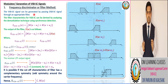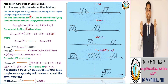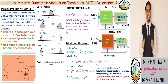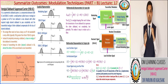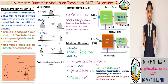First we take the frequency discriminator or filter method. Here the VSBSC signal is generated by passing the DSBSC signal via an appropriate filter, which is also known as a vestigial filter. First we are going to calculate the transfer function of the vestigial filter. The modulating signal and the carrier signal are multiplied using a product modulator or balanced modulator.